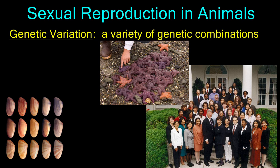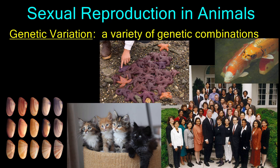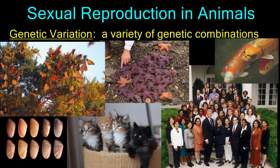Genetic variation provides insurance against extinction. Just in case the environmental conditions were to change drastically, some individuals would surely possess traits that allow them to survive, thus assuring the survival of the species. It's quite an advantage to sexual reproduction.